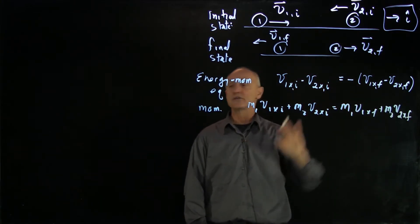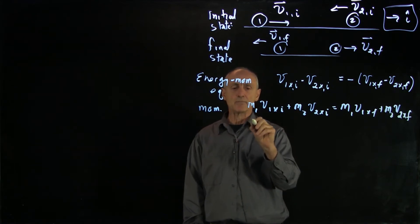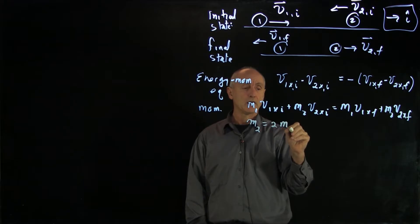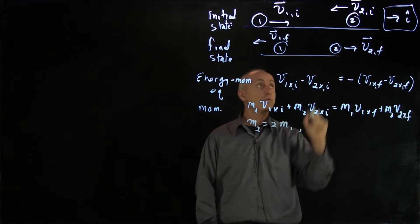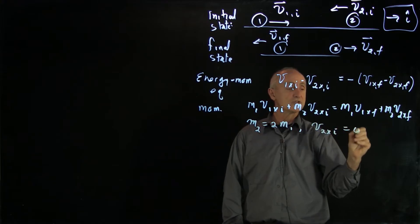Now let's see how this linear system is much easier to solve. Let's look at the same problem that we solved before, where m2 was equal to 2 m1. And also we were in the laboratory frame, so v2 x initial is 0.